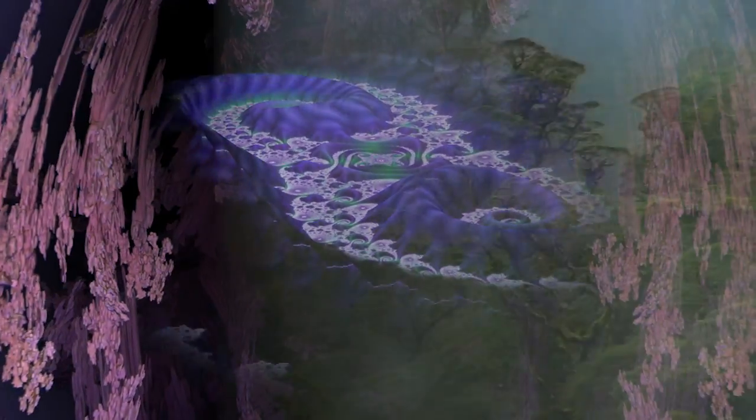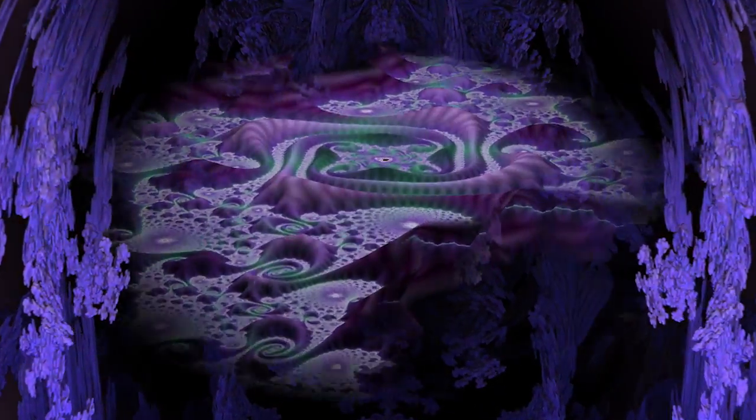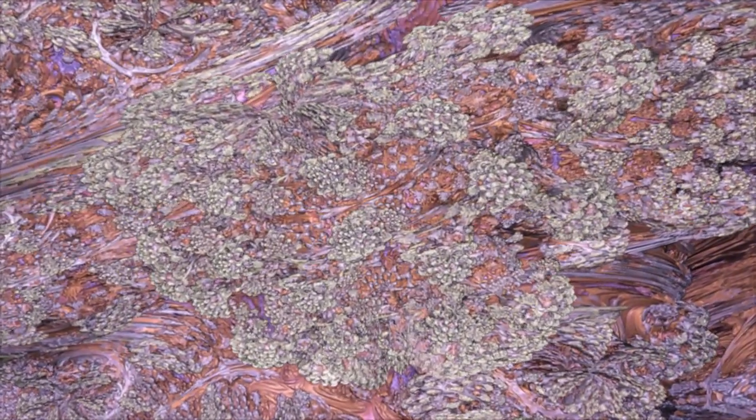We see shapes that remind us of elephants' trunks, tentacles of octopi, seahorses, compound insect eyes. There's some connection between the Mandelbrot set and the way nature operates.